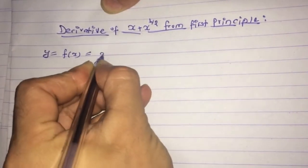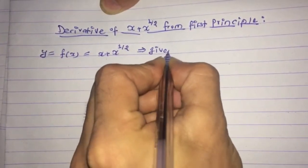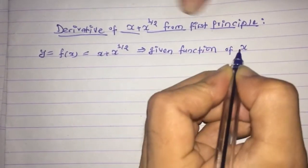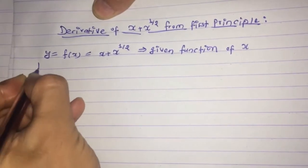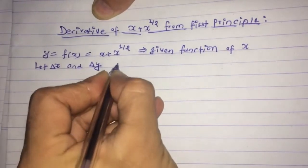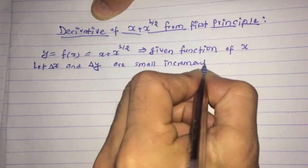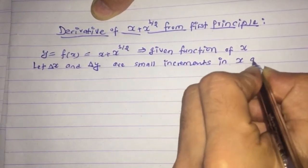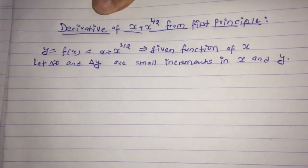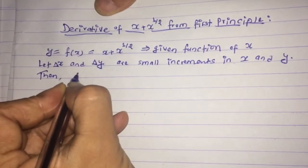For that, first of all, we have given y is equal to f(x), where f(x) is equal to x plus x to the power 1/2, or square root of x. This is the given function of variable x. Suppose δx and δy are small increments in x and y.